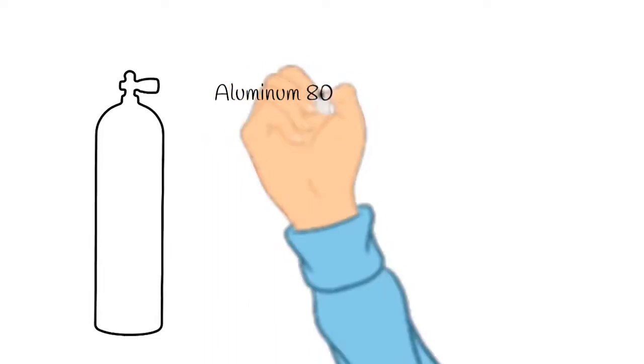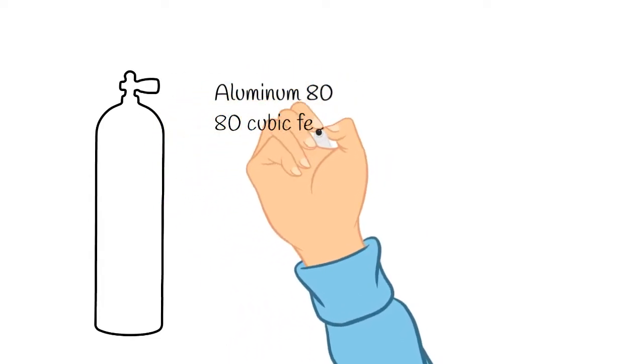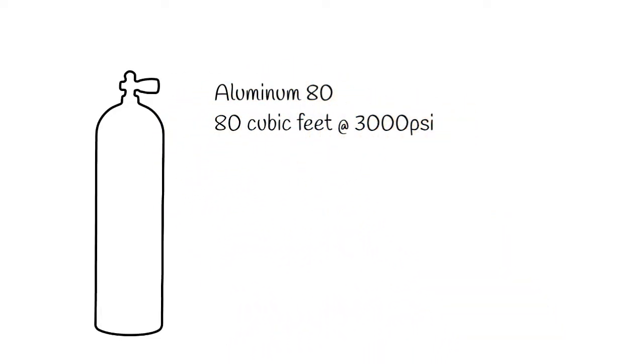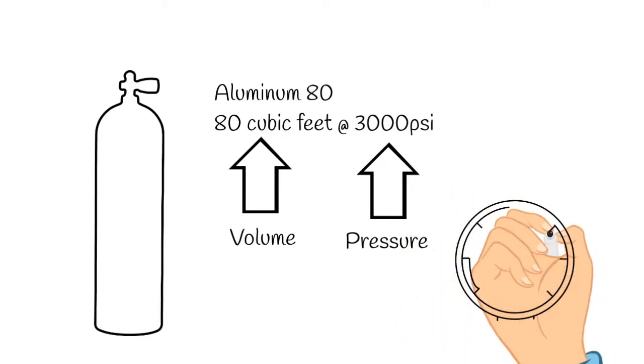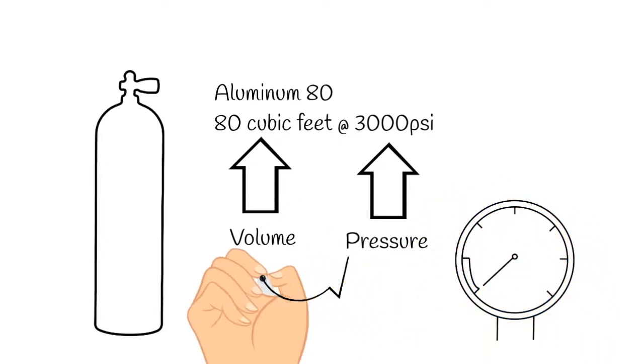The first thing we need to know is the stats of the cylinder. So an aluminum 80, which you've probably heard a bunch - what does that really mean? Well, 80 is 80 cubic feet, which is the volume of the cylinder at its working pressure, its rated pressure, which in this case is 3000 psi. That's what we see on the pressure gauge. Usually you get an aluminum 80 and it's filled to about 3000 psi.